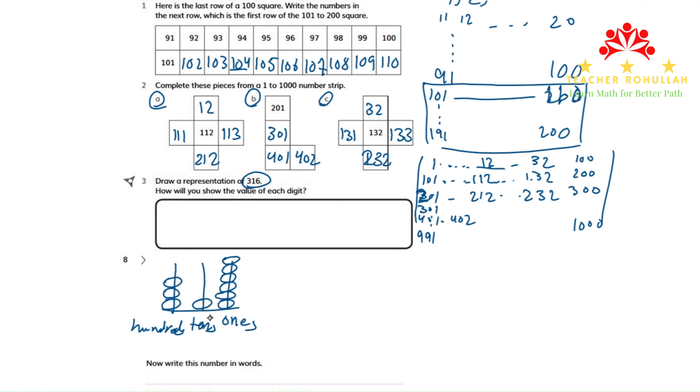316. This is called an abacus. It says, how do you show the value?